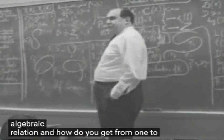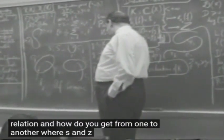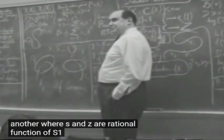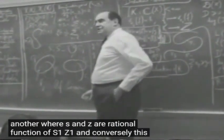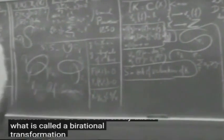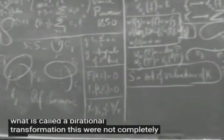And how do you get from one to another? Well, S and Z are a rational function of S1 and Z1, and conversely. This is what's called the birational transformation. These were not completely new.